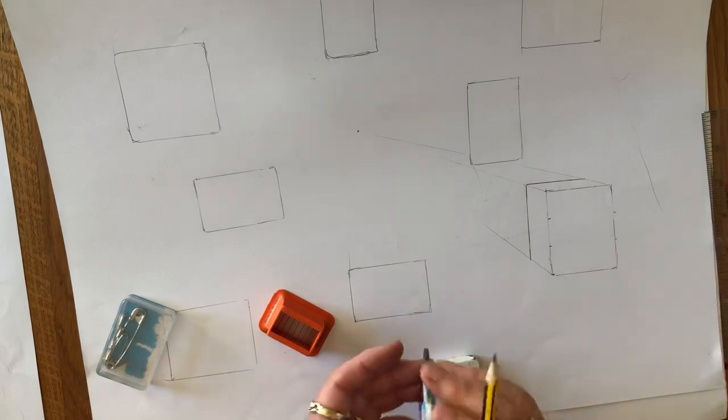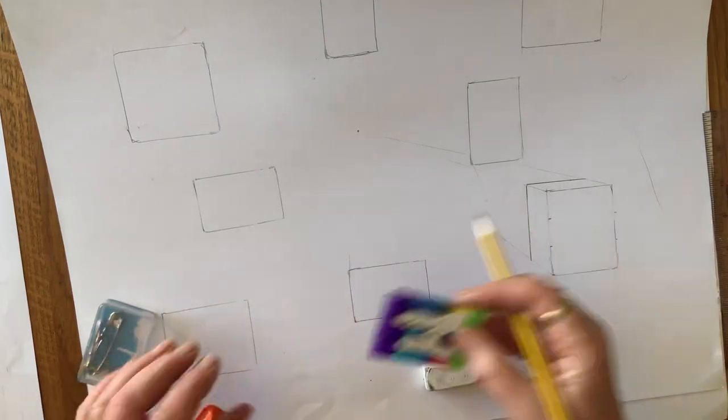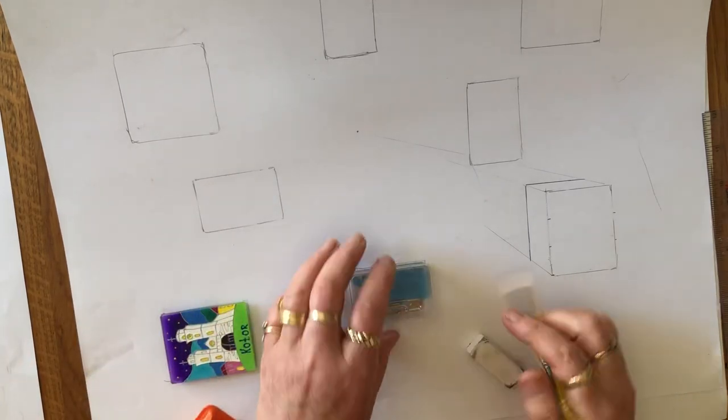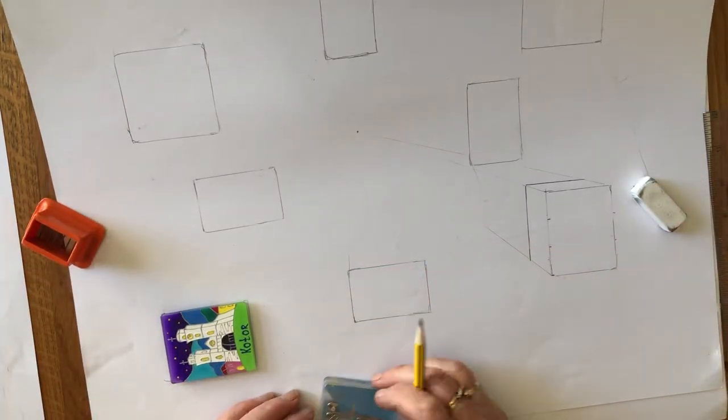First of all, just have a look around and see what you can find which is either square or rectangle. This was a fridge magnet and I drew around it, and this was just out of my stationary box, again just drew around it. So whatever you've got really kicking about at home.